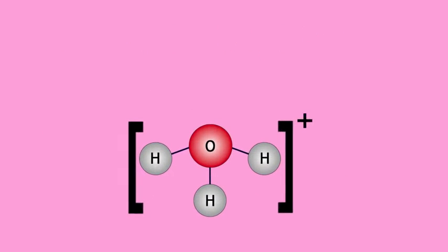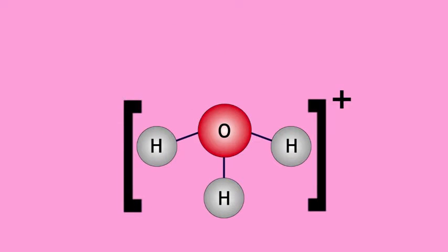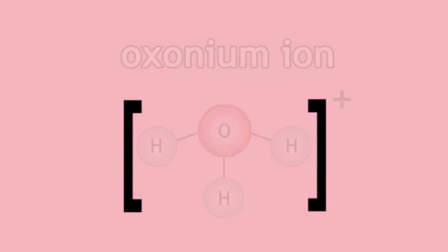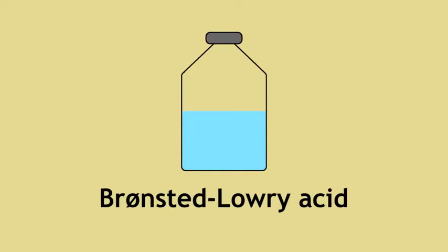A hydronium ion is also known as an oxonium ion. A Bronsted-Lowry acid is a substance that releases or donates protons in solution. In our case, hydrogen chloride.